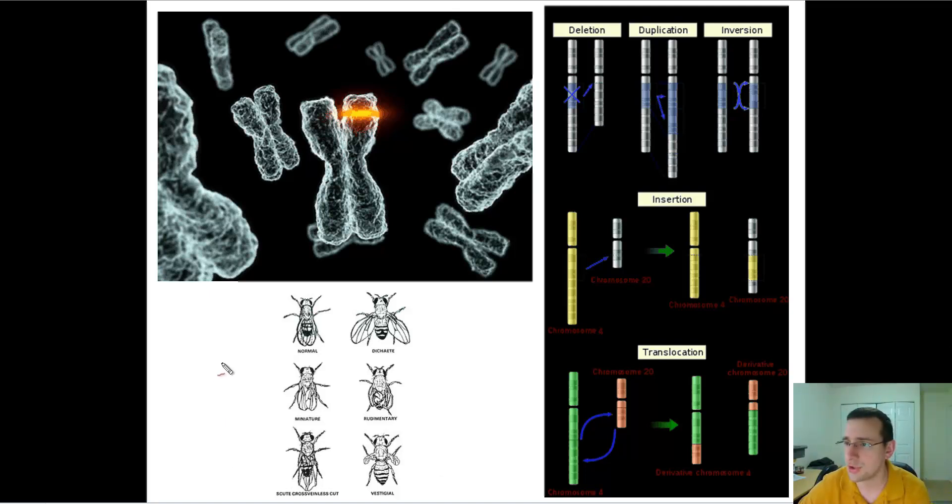And these changes will cause changes in the phenotype. You see here an example of the different shapes of wings for flies because of mutations that occur in the genotype of these flies.